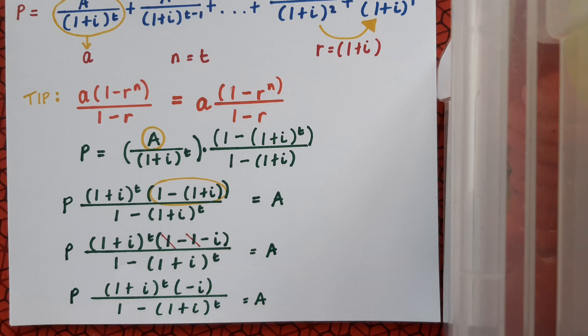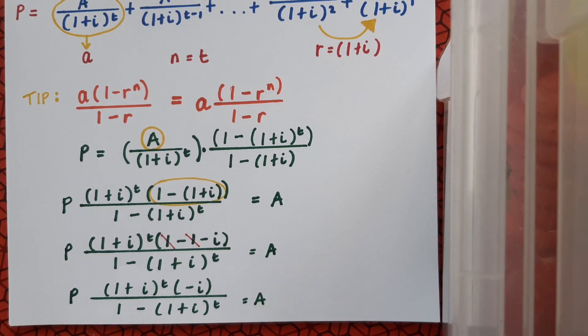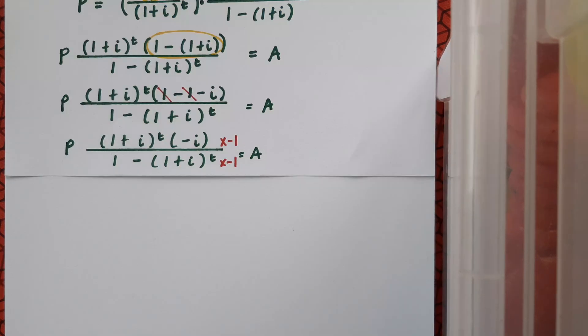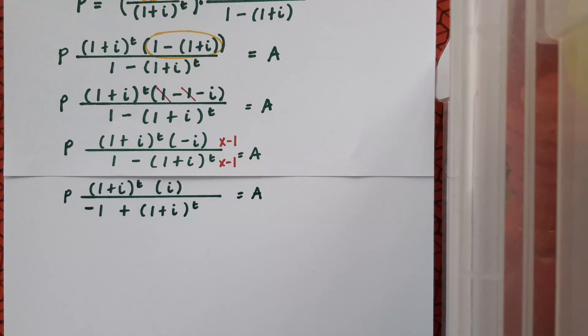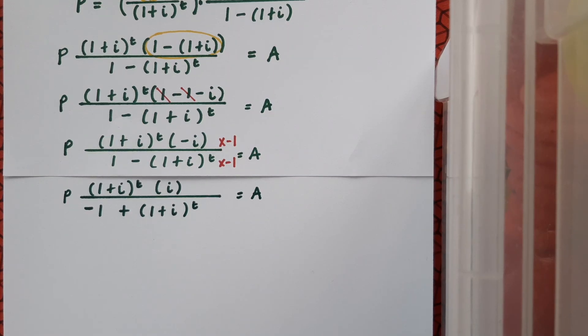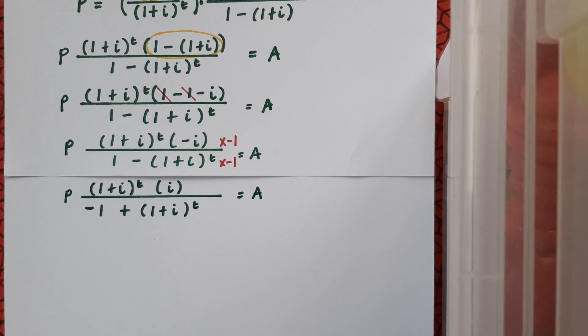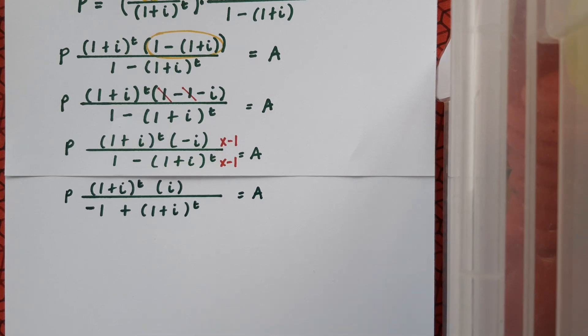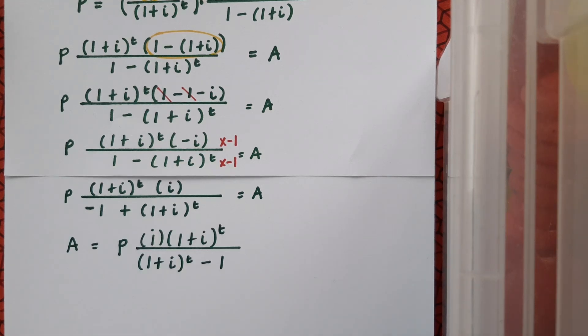And to achieve this all I'll have to do is just multiply the denominator and the numerator by minus 1. And once I do that I'll have P times 1 plus I to the T times I on top over minus 1 plus 1 plus I to the T equals A. So then just a little bit of rearrangement and we're pretty much there. I'm just going to match the original formula exactly by putting the I first and swapping these two terms. And we're home and dry.